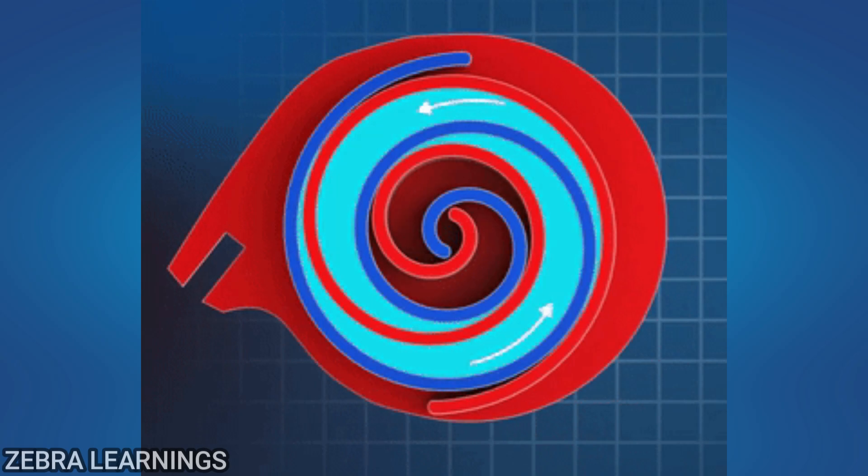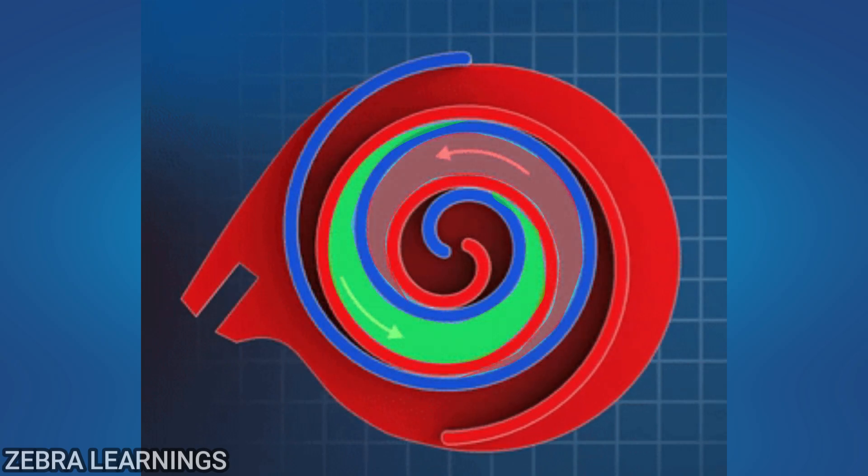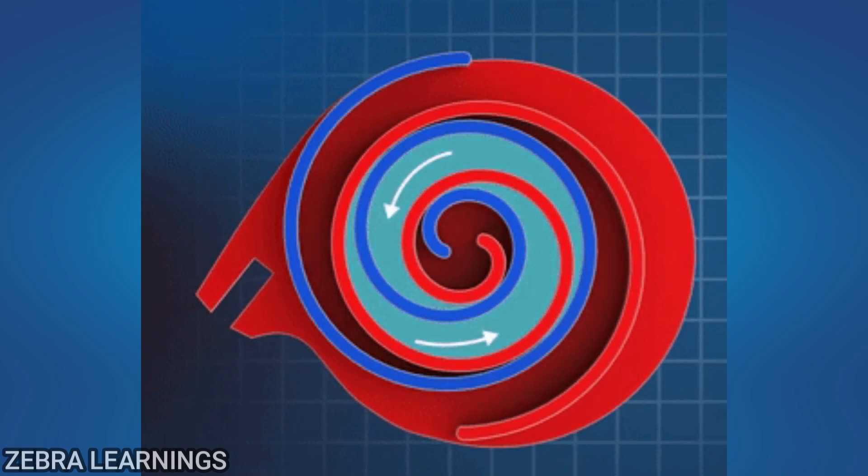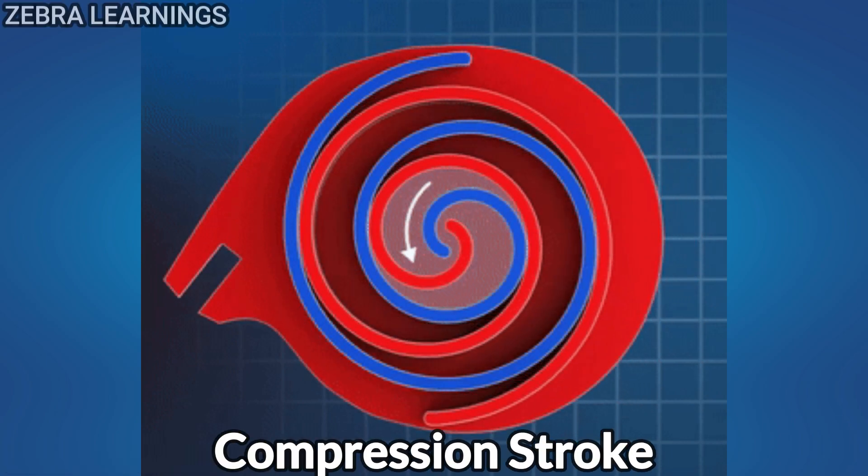As the orbiting scroll moves, it traps the gas in small crescent-shaped pockets. These pockets gradually move inward and their volume decreases, which compresses the gas. This stage is called the compression stroke.